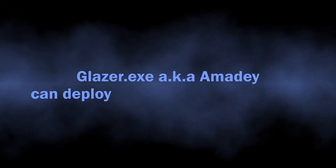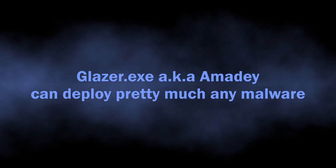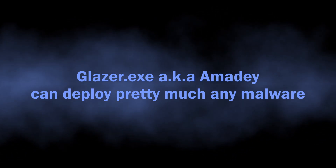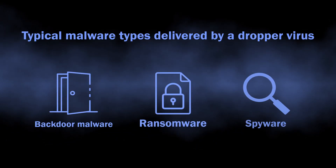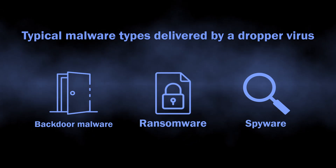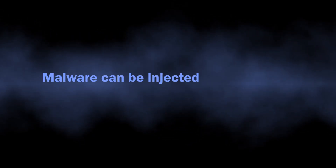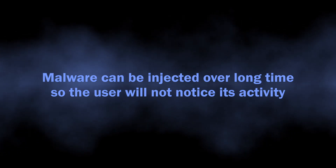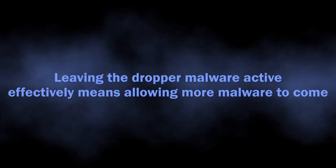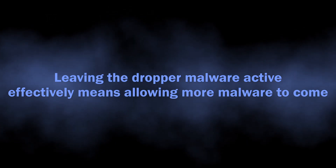There are no real limitations on what malware Amity can deliver, as it has quite an extensive toolkit that allows it to run malicious programs in almost any form. Most often, this loading method is used by backdoors, spyware, and ransomware. Since the dropper stays active for a long time, malware injections may happen over time one by one, so the user may not notice the signs of a threat until it is too late.